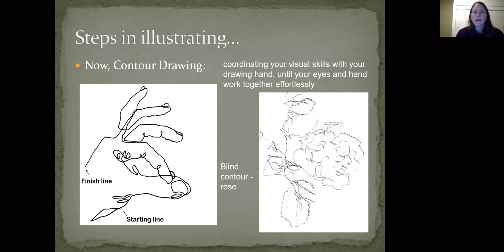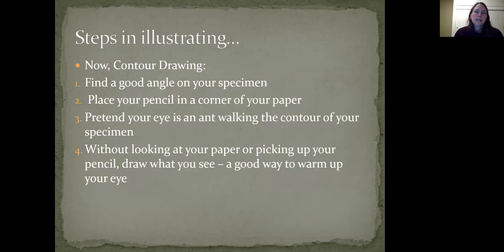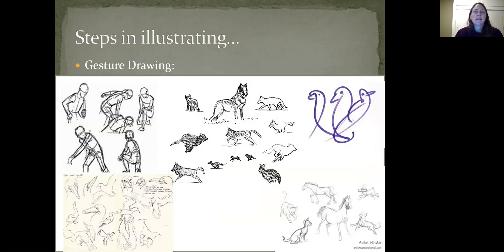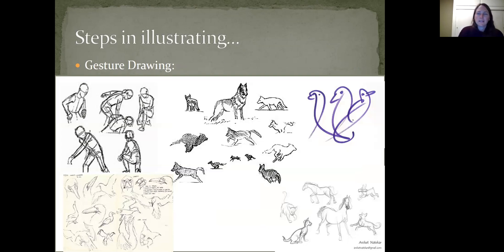So pause while you try a blind contour drawing. Here are some instructions — basically the things I just talked about. Then I want you to work on what's called a gesture drawing. Gesture drawing is meant to capture movement, and this can be a little bit more difficult. But if you have a pet in your house, it can be really fun to try to capture the movements your pet is making, especially a quick pet like a lizard or bird. So this is just to kind of get you warmed up.